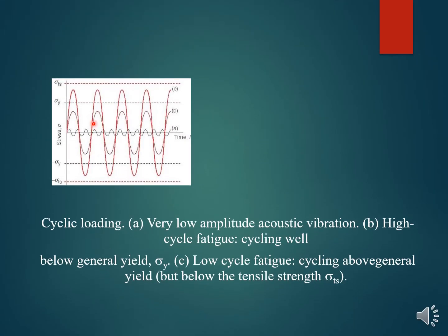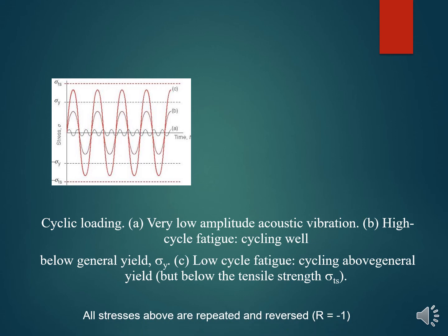Here are examples of cyclic loading: the first is very low amplitude acoustic vibration, the second is high cyclic fatigue — cyclic loading well below the yield strength — and the third is low cycle fatigue — cyclic loading above the yield strength. All the stresses above are repeated and reversed.